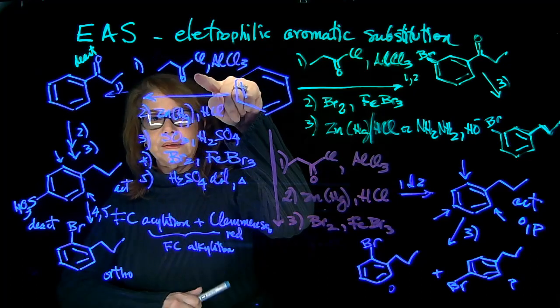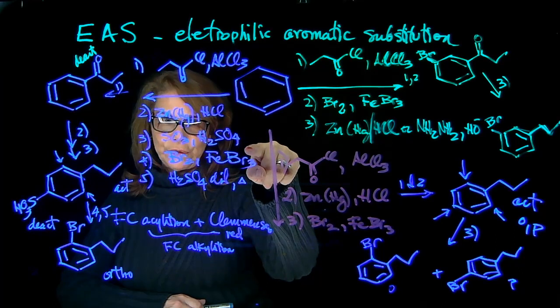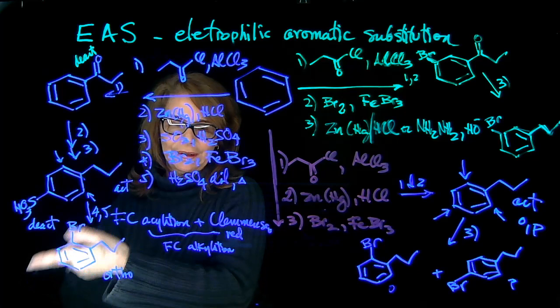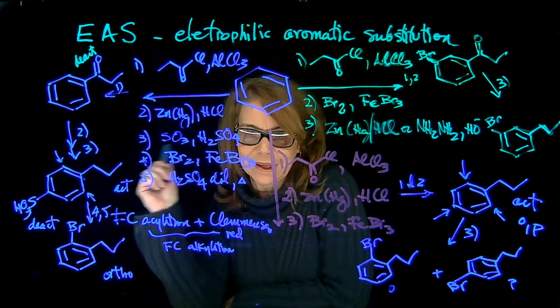The sequence involved then, acylation, Clemson reduction, sulfonation, the bromination step, and desulfonation. In the last step, I didn't draw it. I remove the sulfonic acid group.